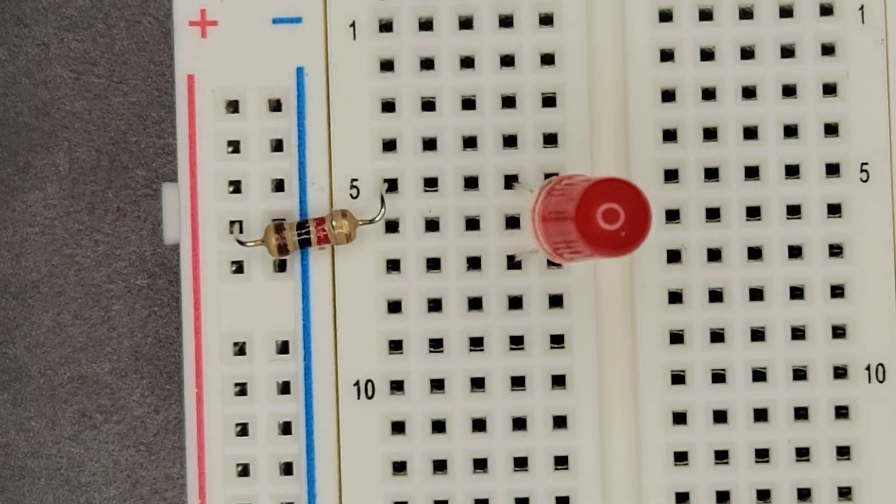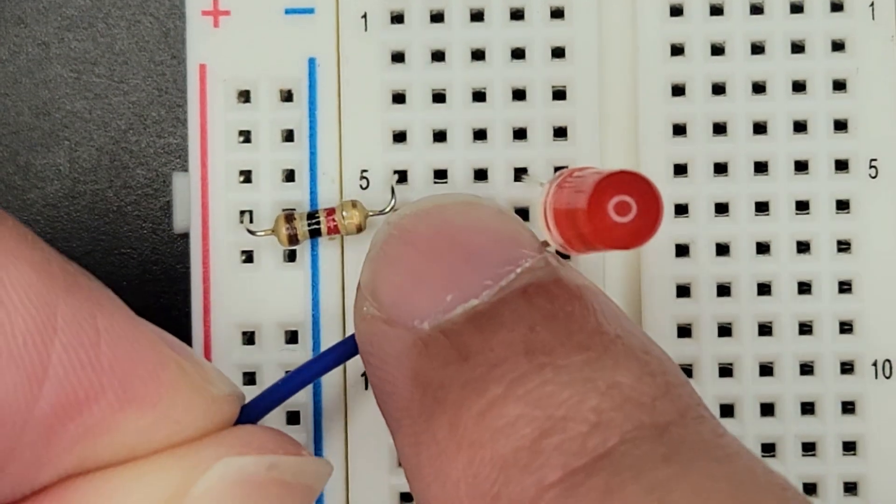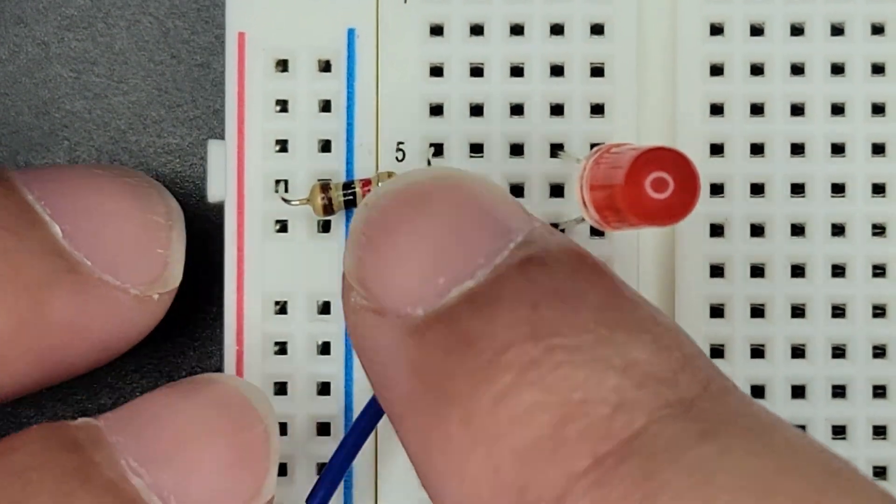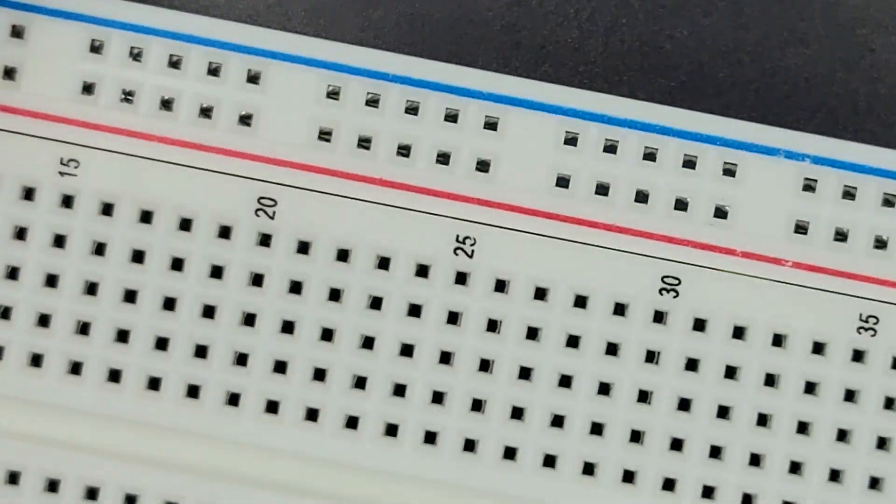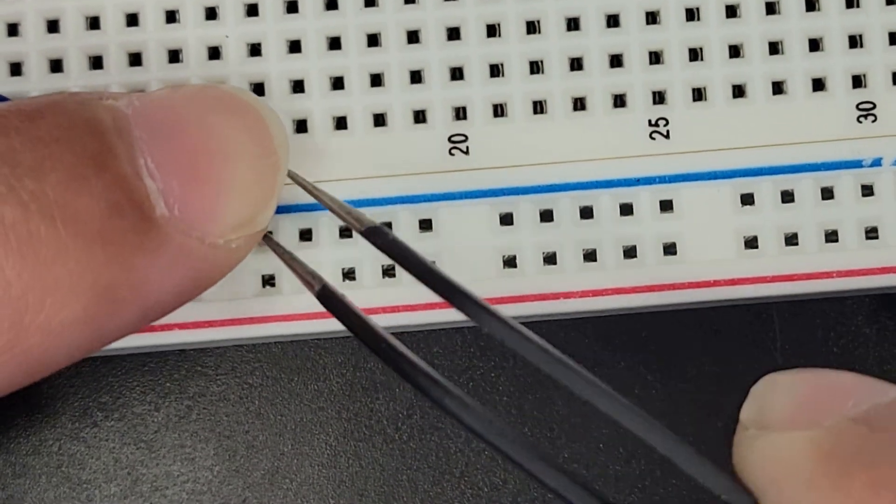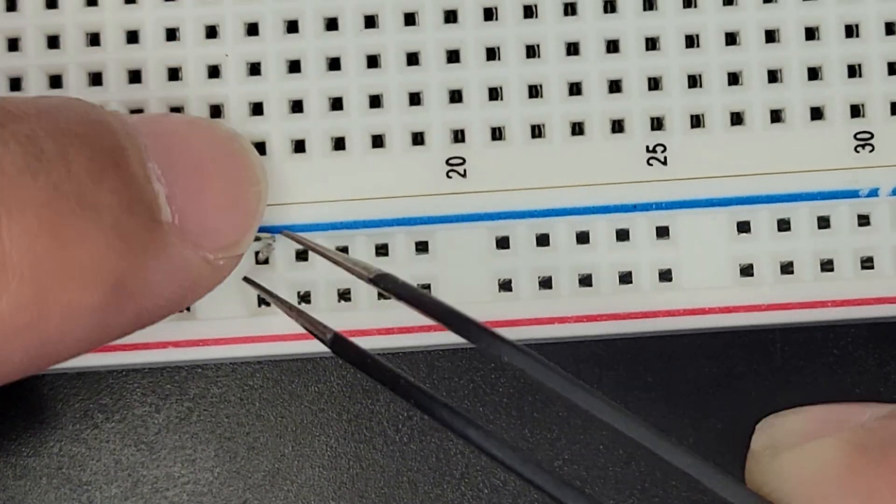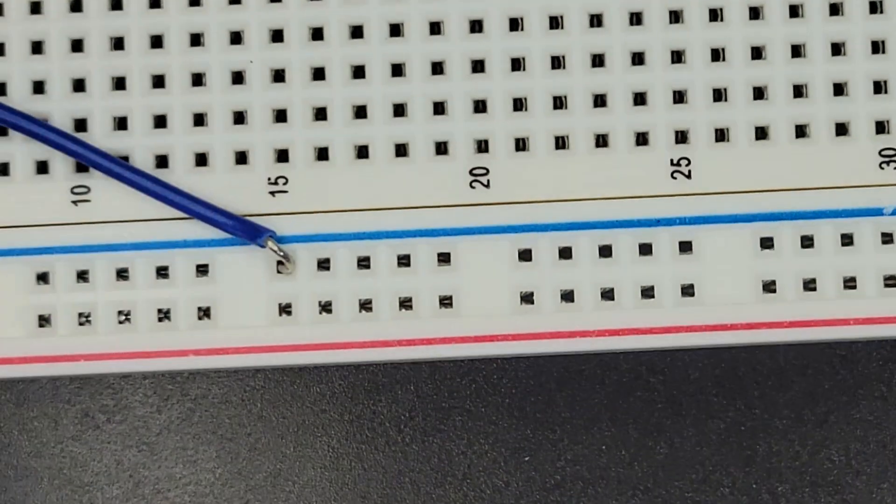I'm going to use this blue cable to do that. So if we plug into row seven and then we plug the other side into any one of these ground connections here, then we should have a circuit.